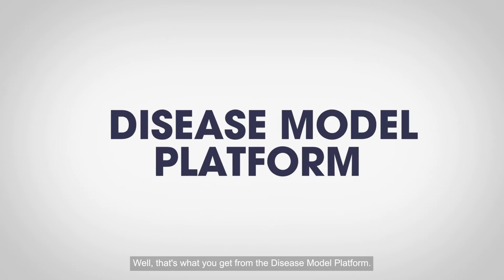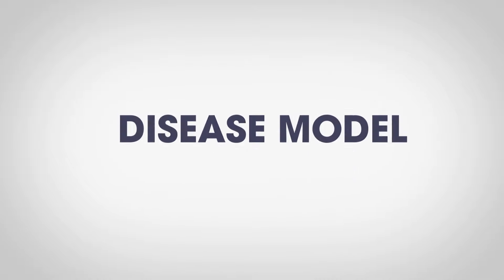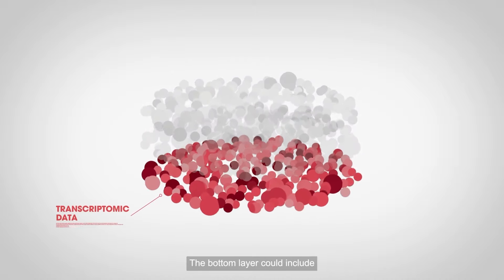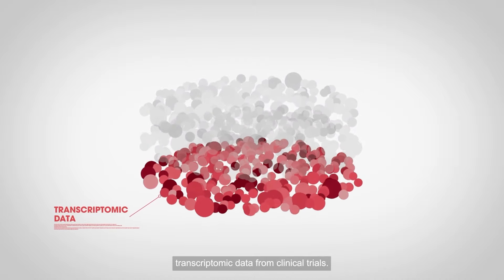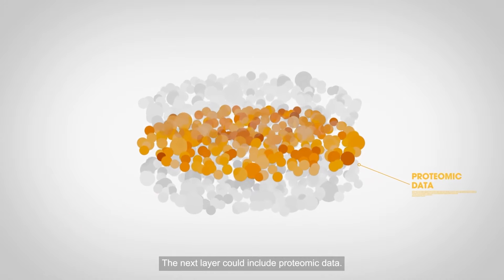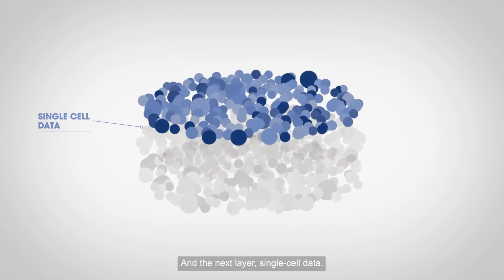Well, that's what you get from the disease model platform. You get layers and layers of pre-computed data. The bottom layer could include transcriptomic data from clinical trials. The next layer could include proteomic data. And the next layer? Single-cell data.